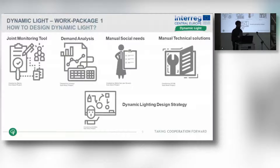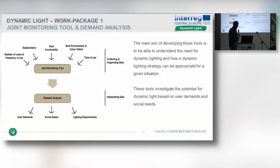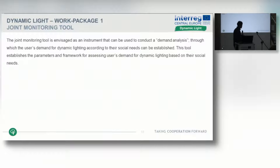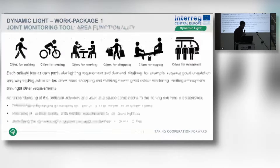The joint monitoring and demand analysis tools were designed to investigate the potential for dynamic light based on user needs and demands. The joint monitoring tool can be seen as collecting and organizing data, whereas demand analysis is more about interpreting data. The joint monitoring tool consists of six different themes: data functionality, stakeholders, built environment, time of use, number of users, and lighting analysis.